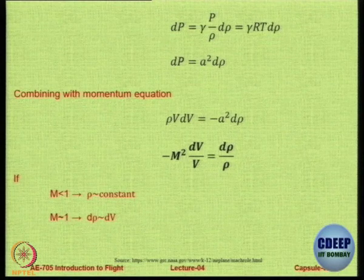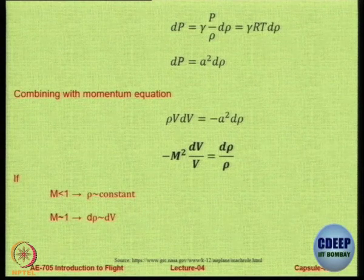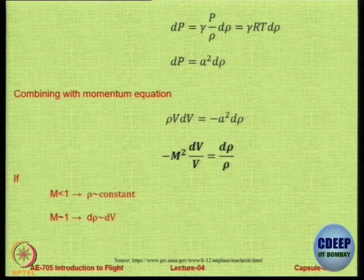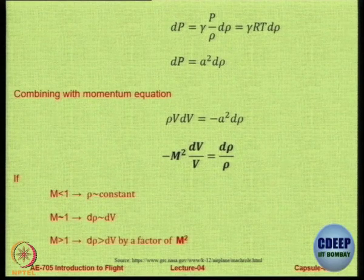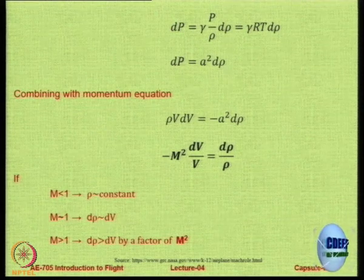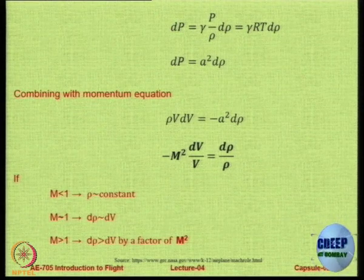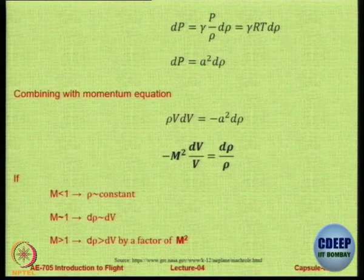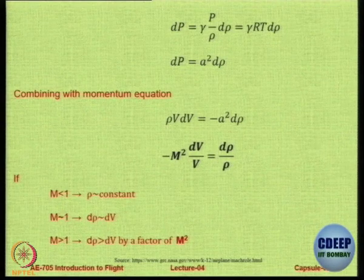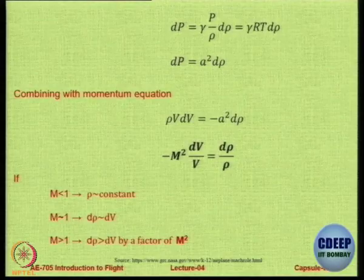As Mach number keeps on increasing, the link between the change in density and velocity becomes prominent. When Mach number is 1, the change in density equals the change in velocity. At Mach number more than 1, the factor becomes M squared. This is the significance of Mach number — we do not take it just as a ratio for no reason. It gives you a link between velocity and change in density.